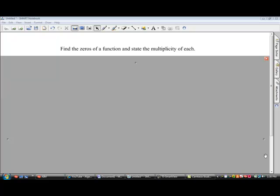This set of directions comes from section 4.1 in your book. It asks you to find the zeros of a function and state the multiplicity of each. So we're going to look at a couple of example problems.